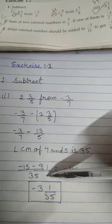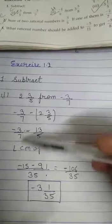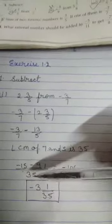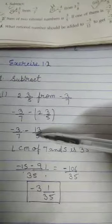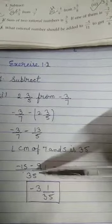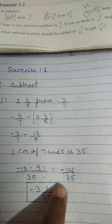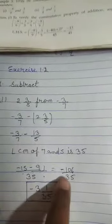Now we find the LCM of 7 and 5 that is 35. We write 35 here and now we divide 7 from 35, so answer is 5. 5 multiply by minus 3 that is minus 15. Then we divide 5 from 35, so 7. 7 multiply by 13 that is 91. Both numbers are negative form, so when we add these numbers, these are minus 106 upon 35.